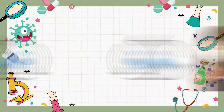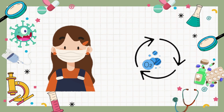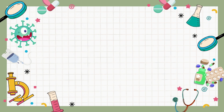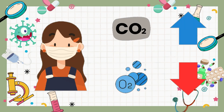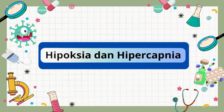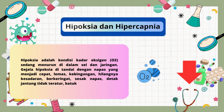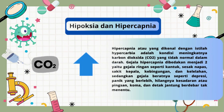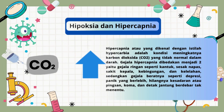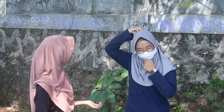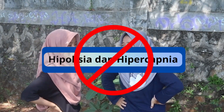Seperti yang sudah dijelaskan, ketika memakai masker sirkulasi tidak berjalan lancar. Alih-alih karbon dioksida dikeluarkan, malah bisa terhirup kembali oleh tubuh. Hal ini tentu berbahaya dan tidak menutup kemungkinan tubuh akan mengalami kelebihan karbon dioksida dan kekurangan oksigen, atau dalam bahasa ilmiahnya disebut dengan hipoksia dan hiperkabnia. Hipoksia adalah kondisi di mana kadar oksigen sedang menurun, sedangkan hiperkabnia adalah kondisi meningkatnya karbon dioksida yang tidak normal dalam darah. Jadi kalau mau lari, maskernya dilepas dulu untuk menghindari hiperkabnia dan hipoksia.